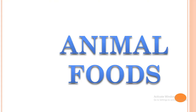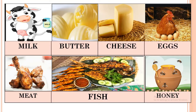Animal foods are the food that we get from animals. We get milk from cows, goats, and buffalo. From milk we make butter and cheese. We get eggs from hens, we get meat, we get fish, and we get honey from honeybees.